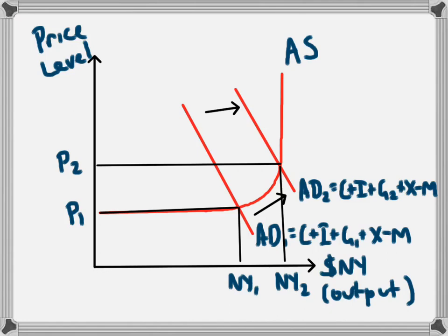This assumes that the economy is operating in the intermediate range of the aggregate supply curve. If you don't understand the three ranges of the supply curve — the Keynesian, the intermediate, and the classical — you should watch the video on this aggregate supply curve, which is on this channel.